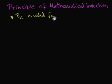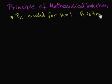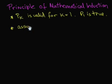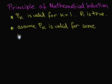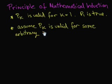The magic of the principle of mathematical induction is that we actually only need to prove that the first element satisfies the property, and that for any other arbitrary element k, assume that it satisfies the property, then prove that the next element, k plus one, will also satisfy it. Since the element k we have picked is an arbitrary number, then we can reach any number.